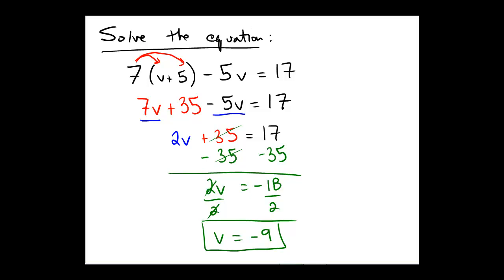Since this is kind of a shorter video, let's check this just for fun. As a check: 7 times negative 9 plus 5, minus 5 times negative 9. This is the left-hand side.